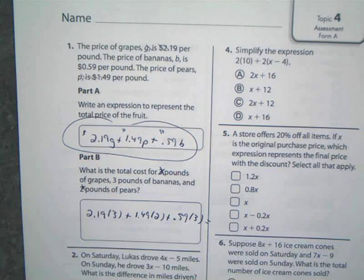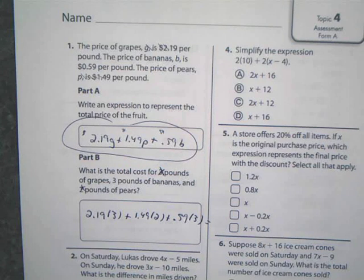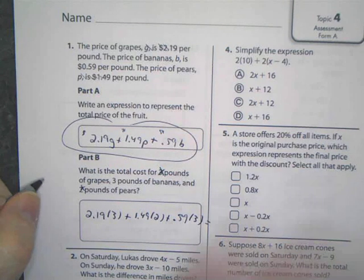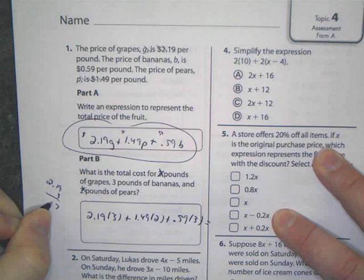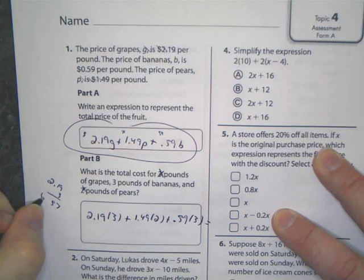Okay. Yeah. If I wanted to, it really isn't that much work. You could do all of your work off to the side. $2.19 times three. $6.57.